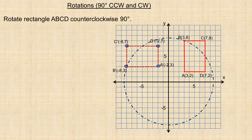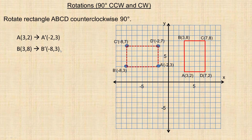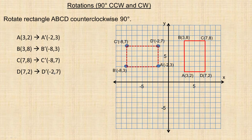So let's write out the pattern. B at (3, 8) turned into B prime at (-8, 3). C at (7, 2) became C prime at (-2, 7). Notice what's happening: the x-coordinate became the new y-coordinate, and the original y-coordinate became the new x-coordinate but changed its sign — so 8 became negative 8, and 2 became negative 2. This is the pattern rule for a counterclockwise 90-degree rotation.